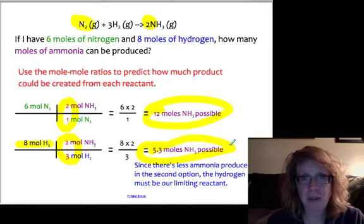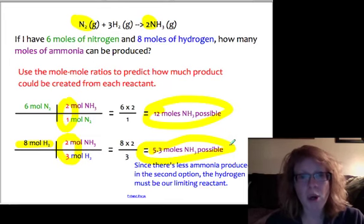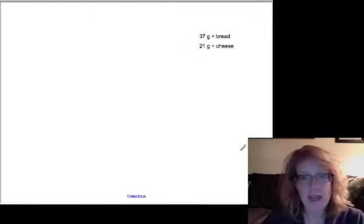Therefore, hydrogen must be our limiting reactant. It runs out first, limits the amount of ammonia to only 5.3 moles, and we end up with some nitrogen left over. It was in excess.